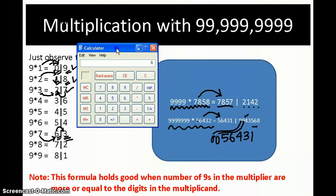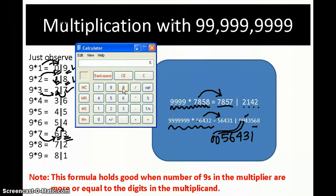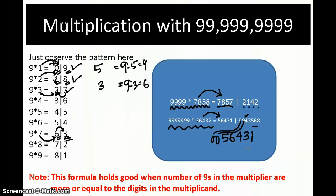Let's check out once. We need to multiply 7 nines, 1,2,3,4,5,6,7 nines into 5,6,4,3,2. So our answer is 5,6,4,3,1,9,9,4,3,5,6,8. 4,3,5,6,8. That's all is the answer for us.